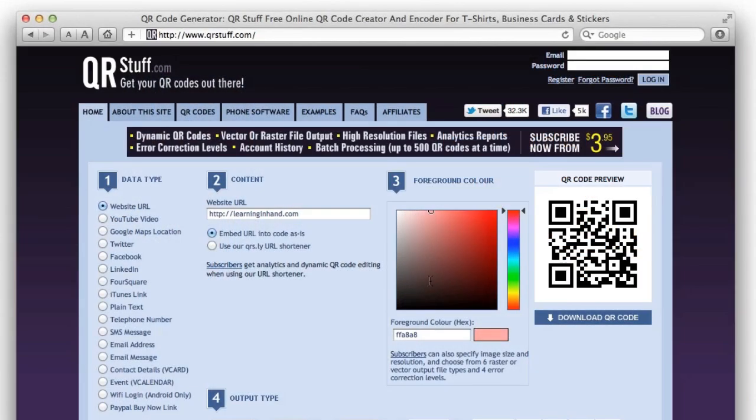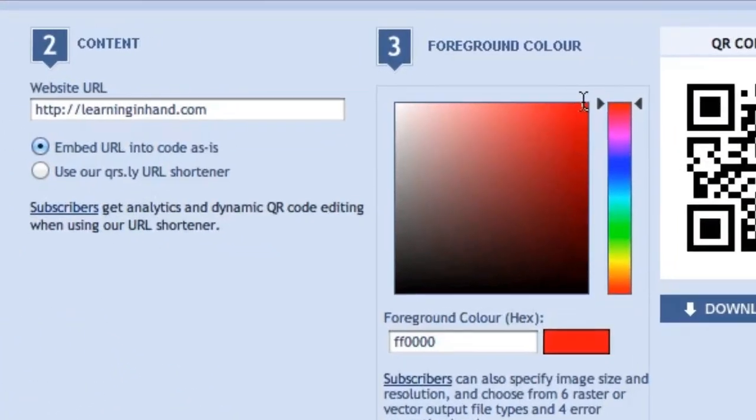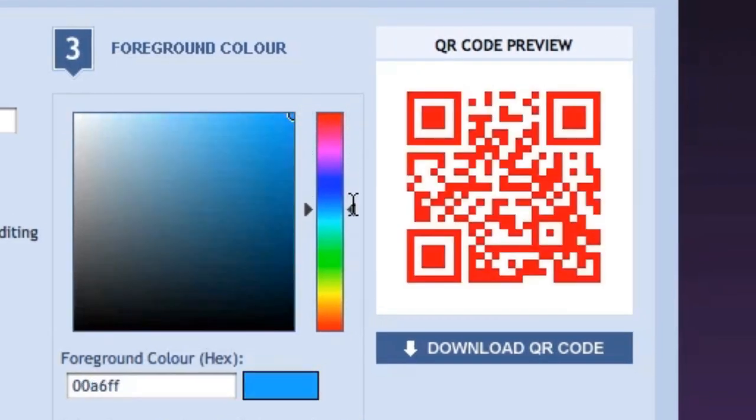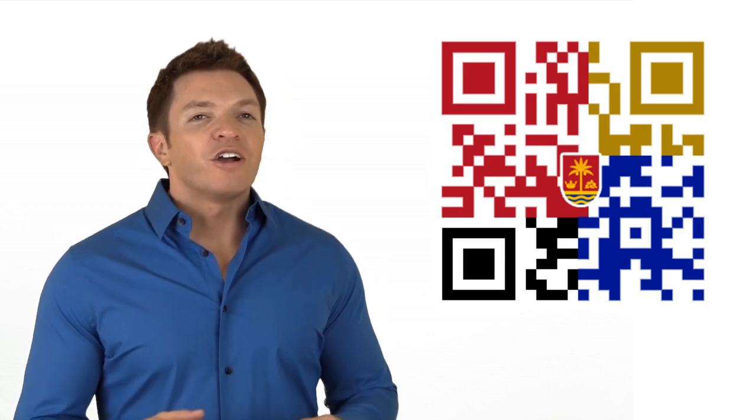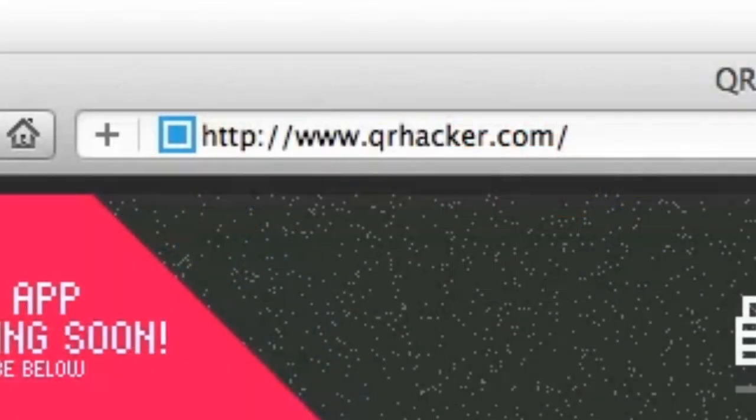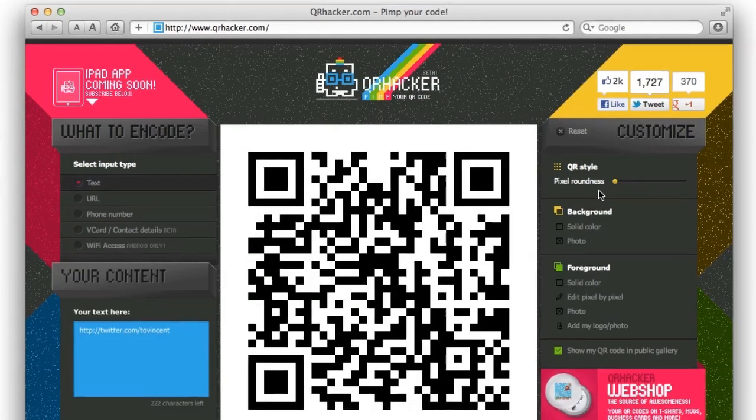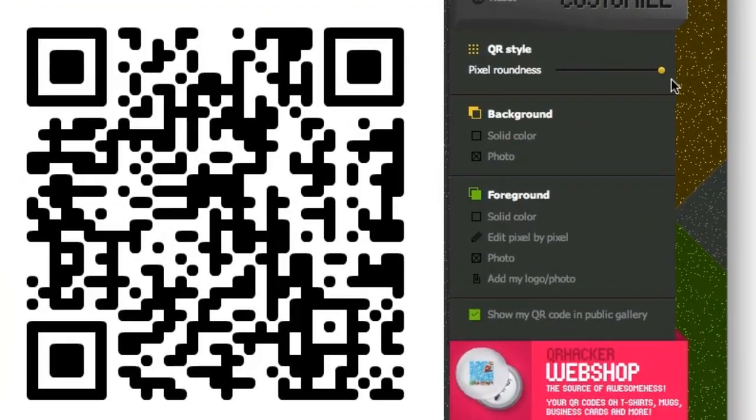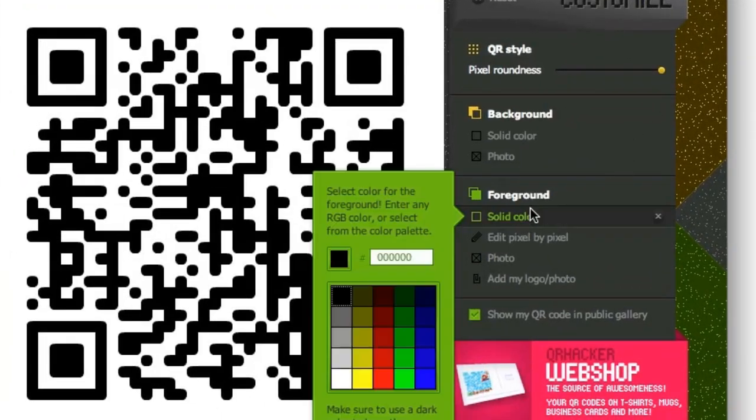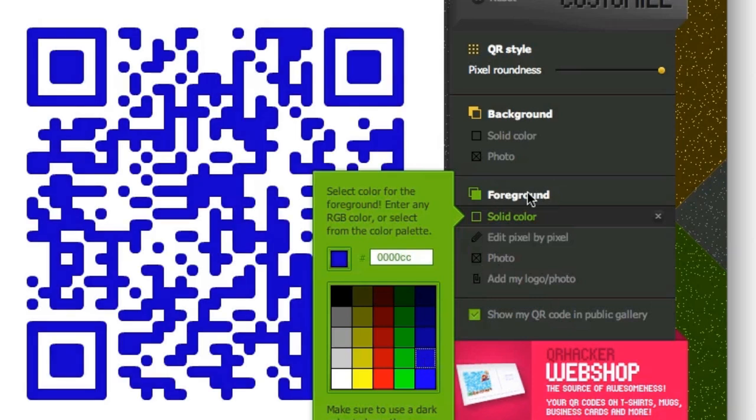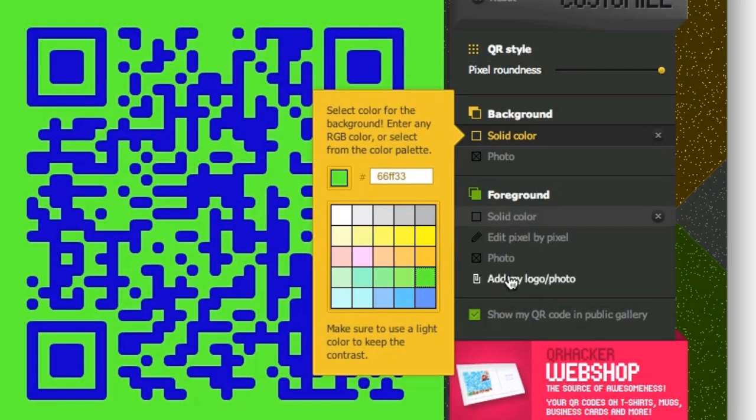QR codes don't have to be black and white. Codes that are colorful can work just as well. QRstuff.com lets you choose a foreground color before you generate a QR code. You can get fancier with code creation. Want a colorful QR code with maybe your school or classroom mascot or logo? Go to qrhacker.com. qrhacker.com doesn't have as many data types as QRstuff, but it does allow you to change the pixel roundness, foreground and background colors, and even lets you add a logo or image to the middle of the code.